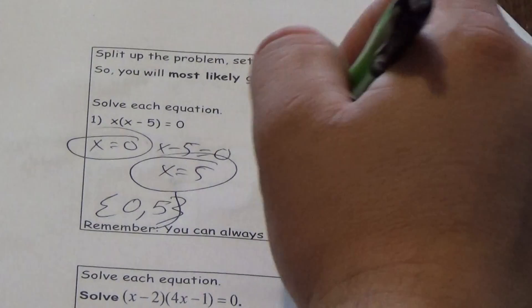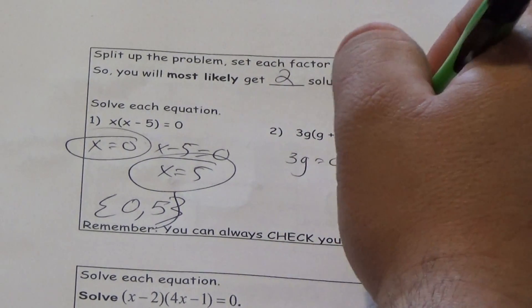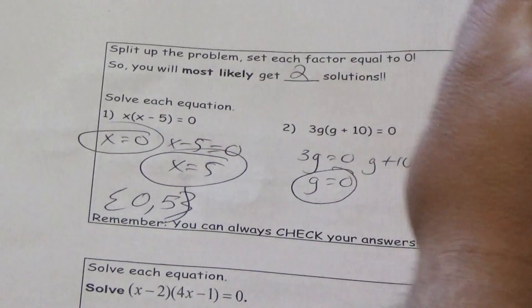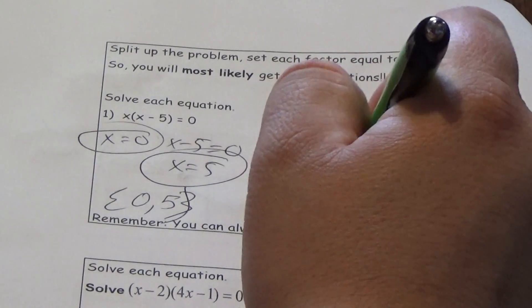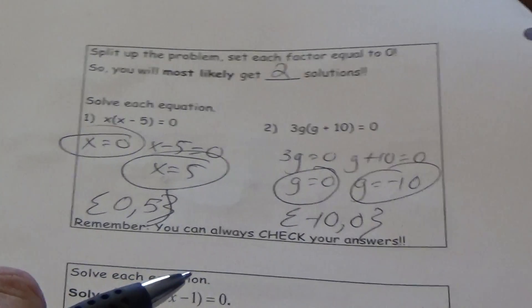The same thing happens here: we have 3g equal to 0 and g plus 10 equal to 0. We divide by 3 and get 0; we subtract 10 and get negative 10. So the correct answers are negative 10 and 0, and again we use set builder notation.